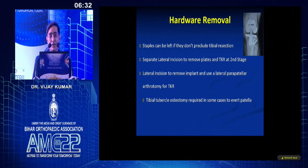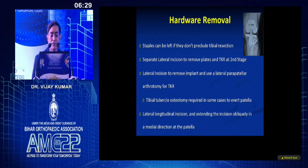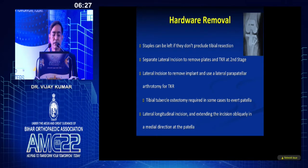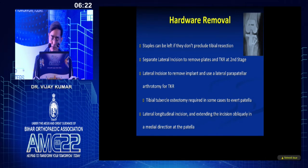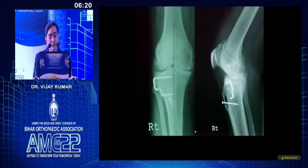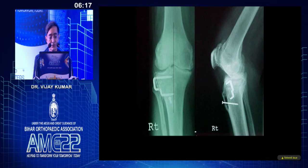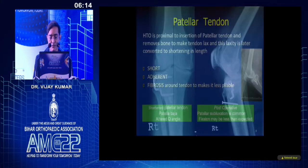Sometimes you might have to do a tibial tubercle osteotomy. Very rarely, you might use the lateral incision, come medially, and do a medial peripatellar approach. If the implant is dead lateral, you cannot remove it from the midline incision, so you require two separate incisions.